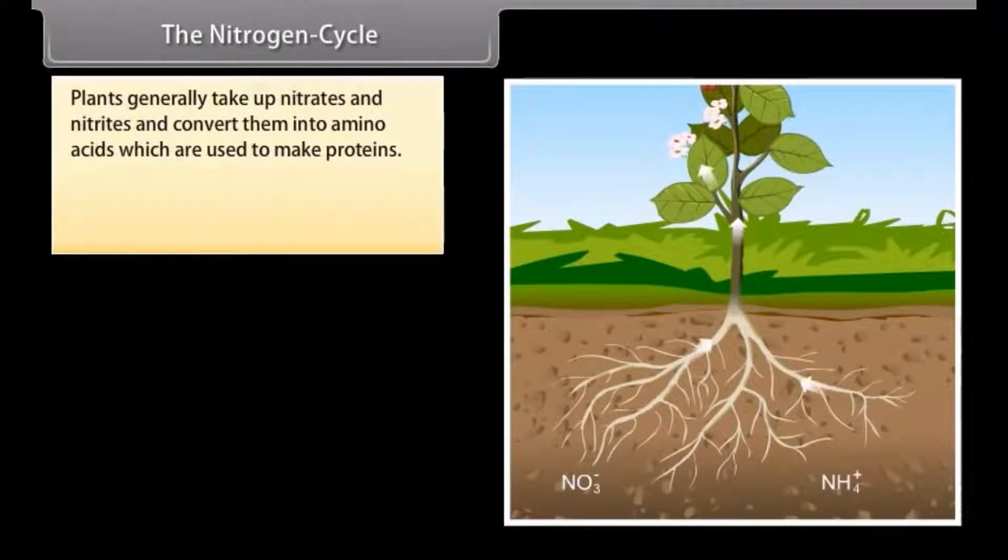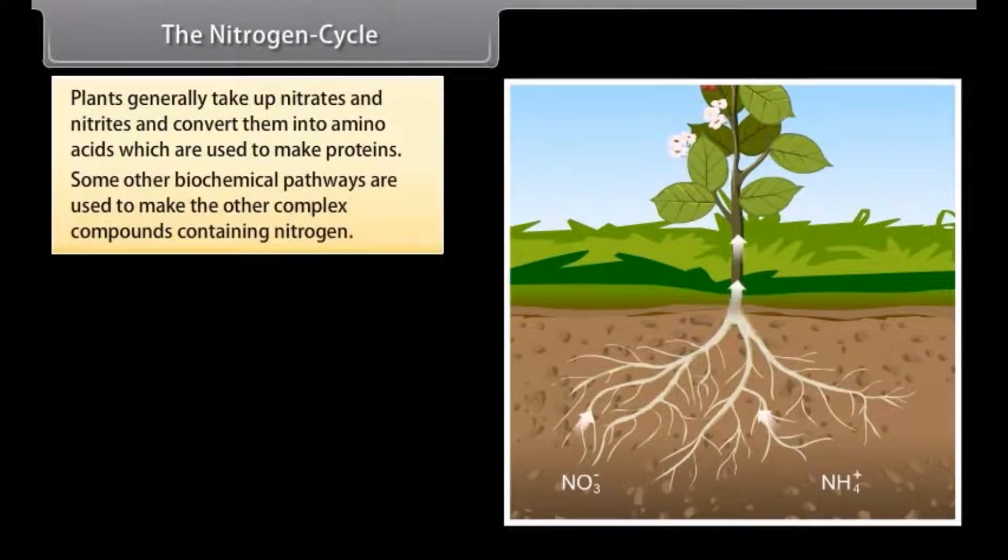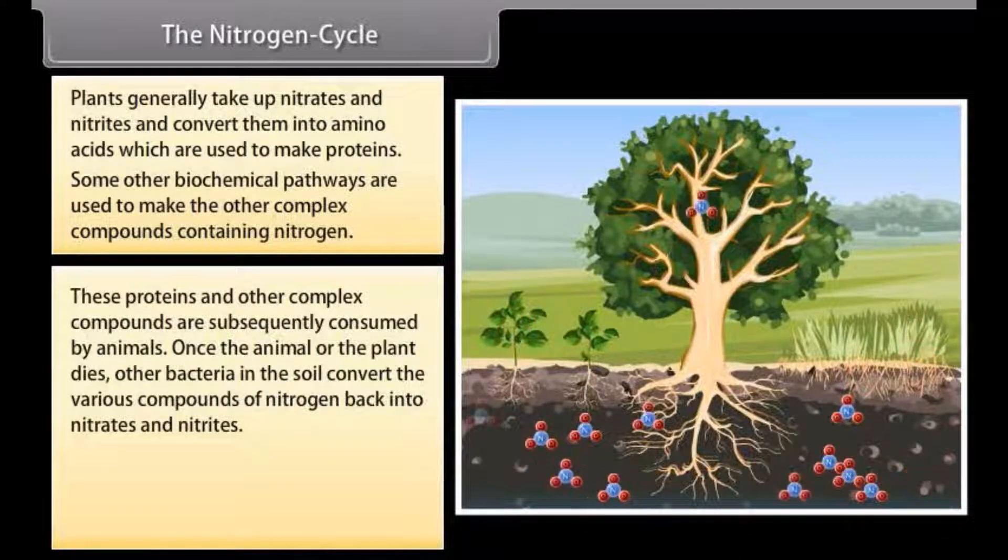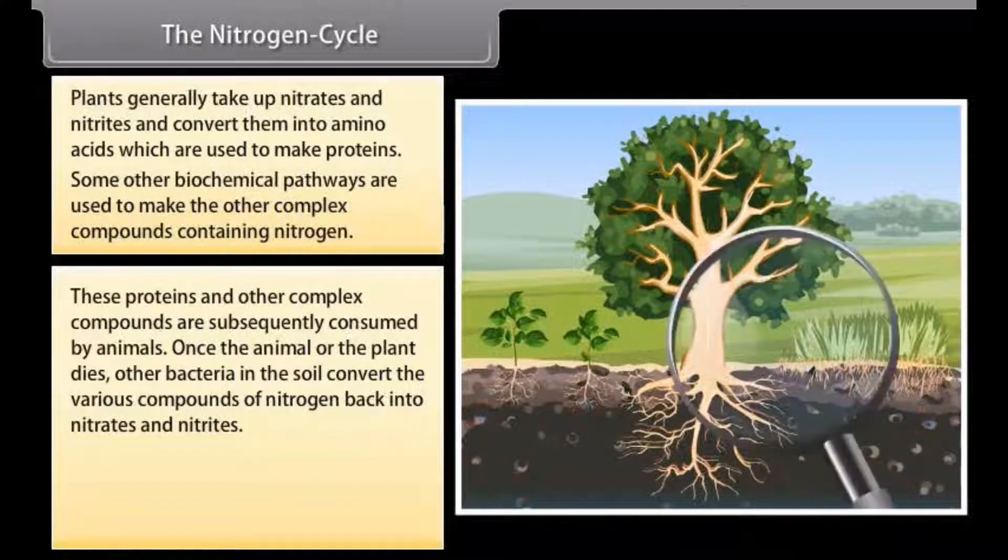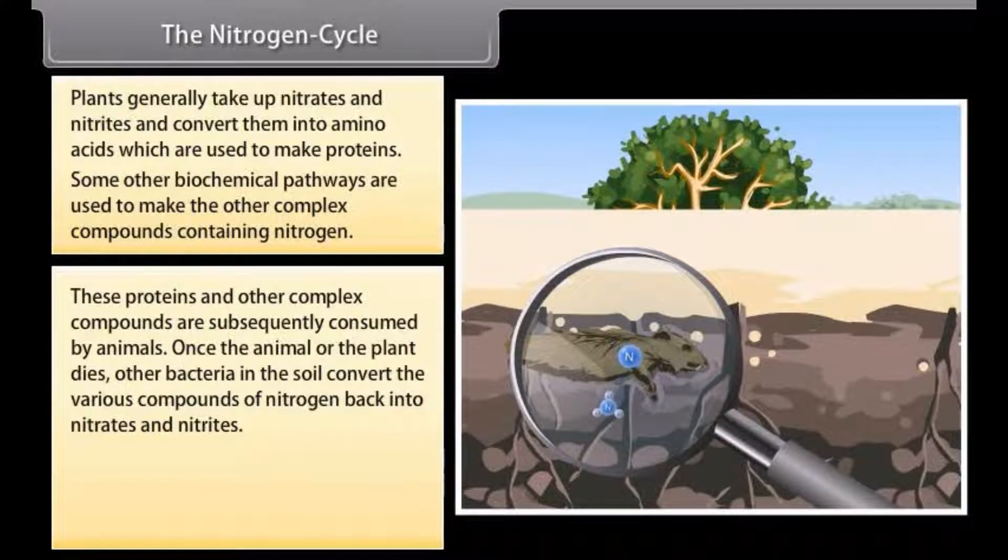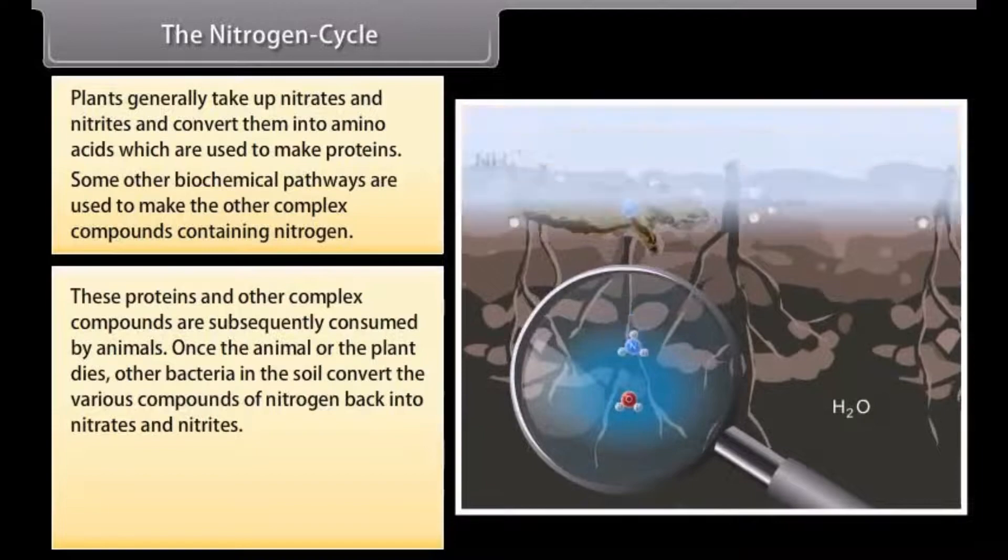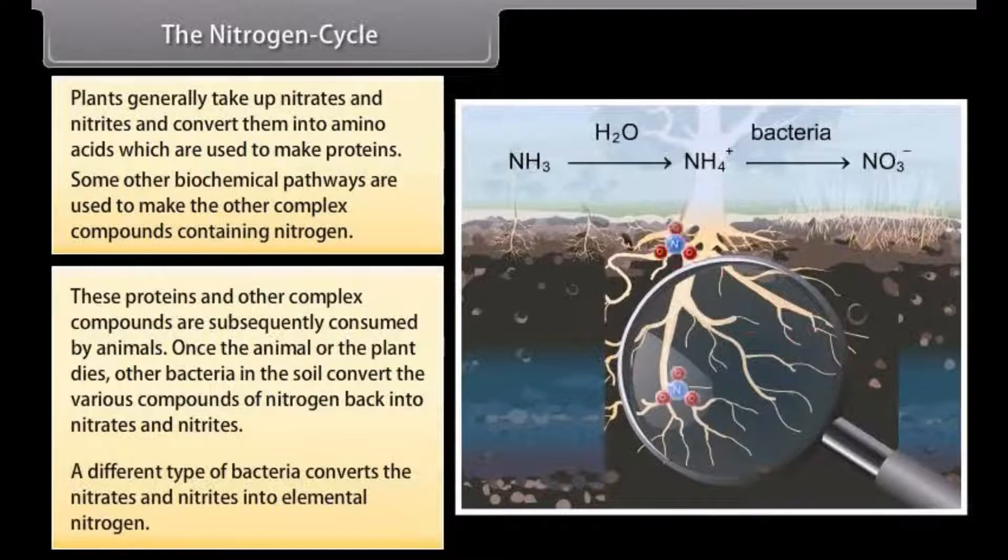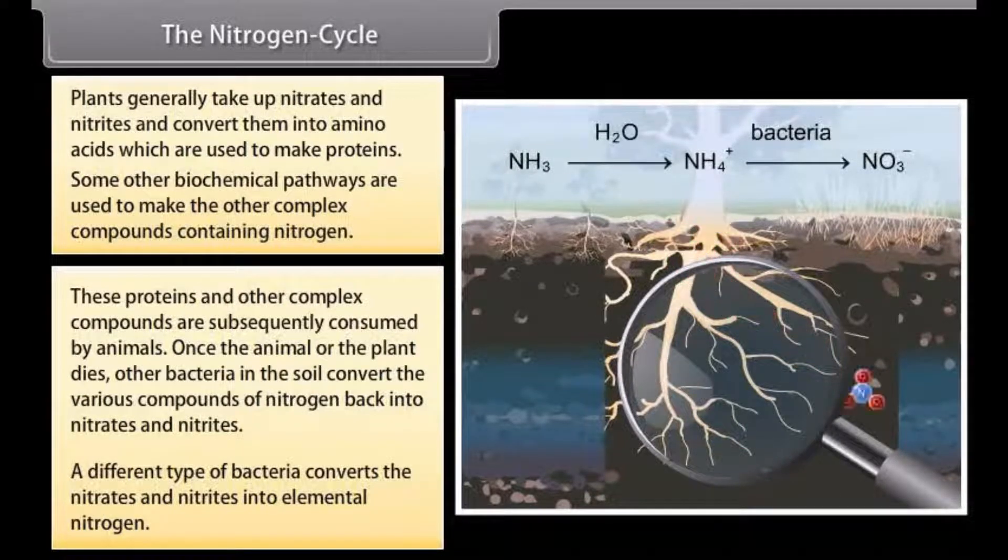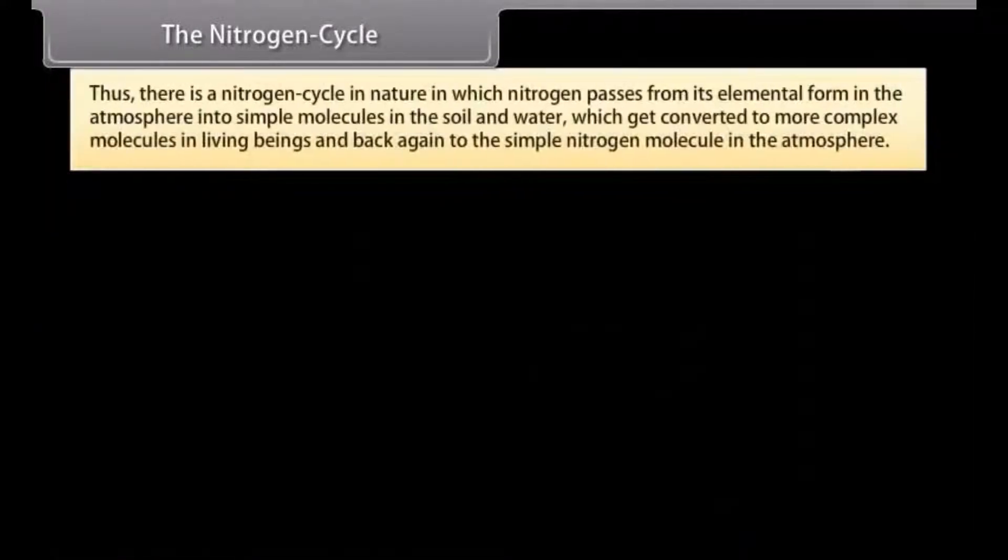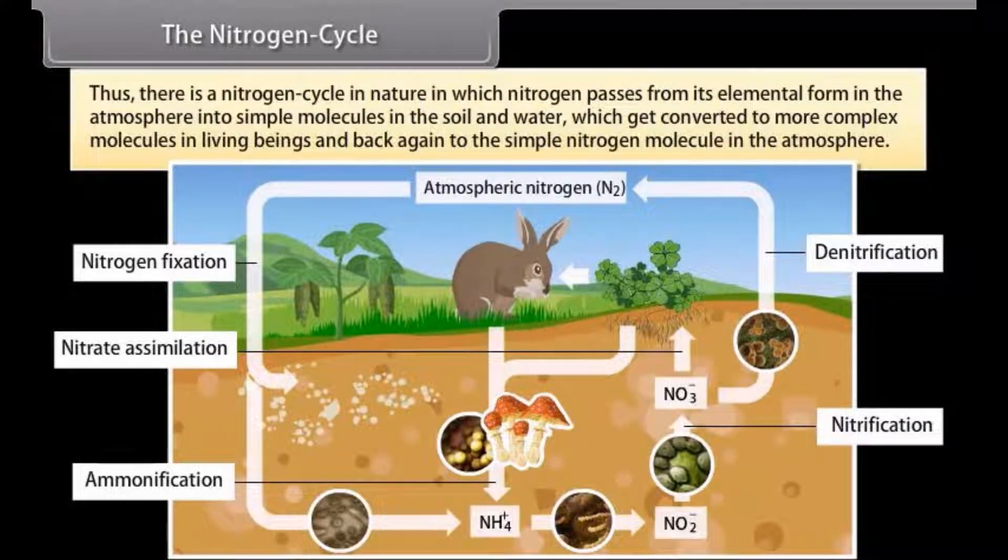Plants generally take up nitrates and nitrites and convert them into amino acids which are used to make proteins. Some other biochemical pathways are used to make the other complex compounds containing nitrogen. These proteins and other complex compounds are subsequently consumed by animals. Once the animal or the plant dies, other bacteria in the soil convert the various compounds of nitrogen back into nitrates and nitrites. A different type of bacteria converts the nitrates and nitrides into elemental nitrogen. Thus there is a nitrogen cycle in nature in which nitrogen passes from its elemental form in the atmosphere into simple molecules in the soil and water, which get converted to more complex molecules in living beings and back again to the simple nitrogen molecule in the atmosphere.